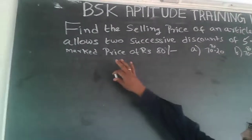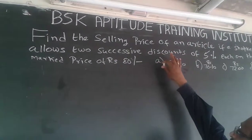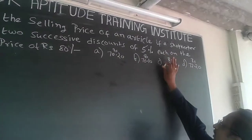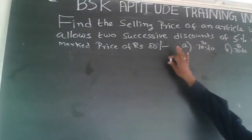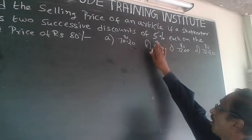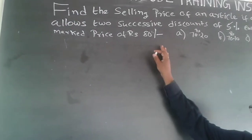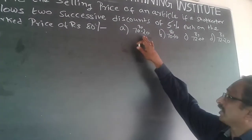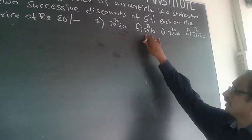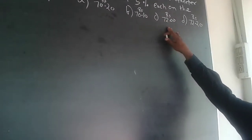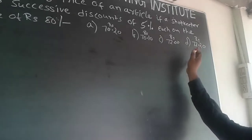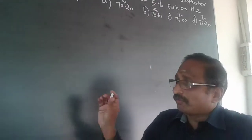Now I'm going to handle this question: Find the selling price of an article if a shopkeeper allows two successive discounts of 5% each on the marked price of Rs 80. The options are: a) 70.20, b) 70.10, c) 72, and d) 32.20.